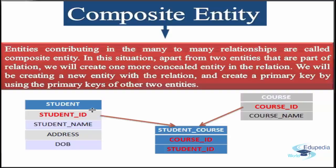Consider this example: multiple students have enrolled for multiple courses. In this case, we create a student entity and a course entity. Then we create one more table for the relationship of enrollment, known as the student-course table. We add the primary key of course and the primary key of student — course ID and student ID respectively — into this composite table.